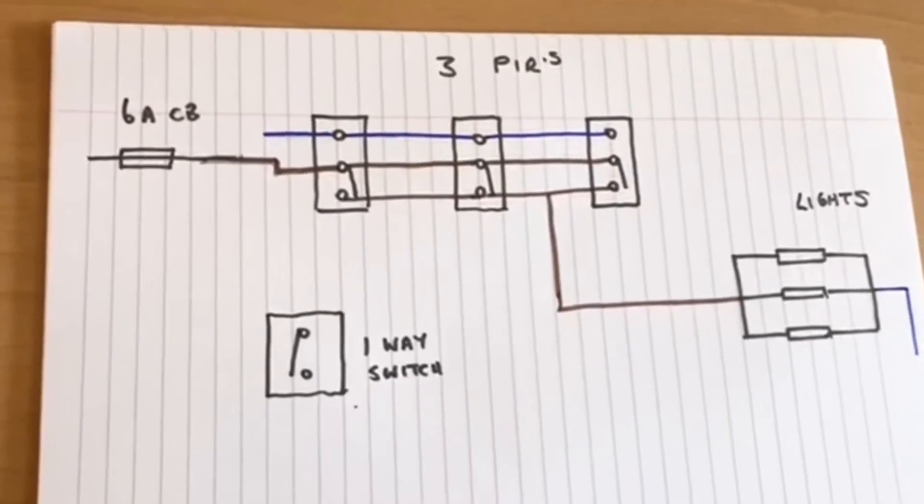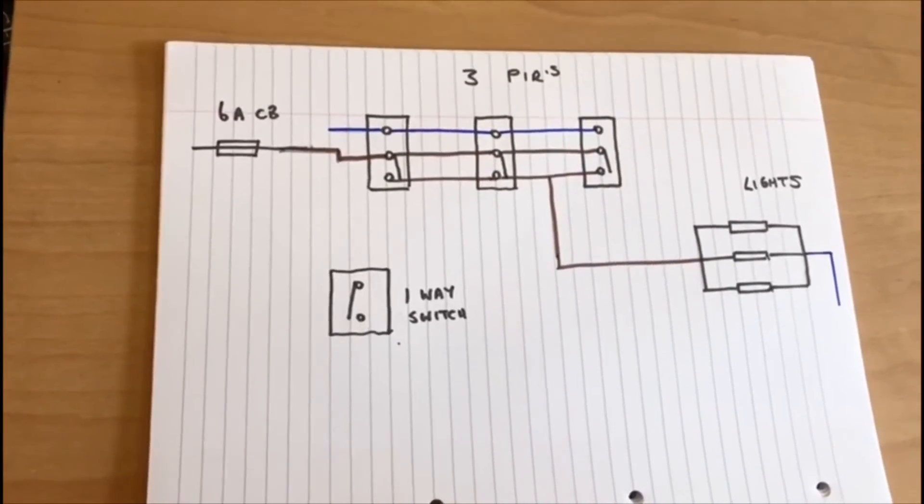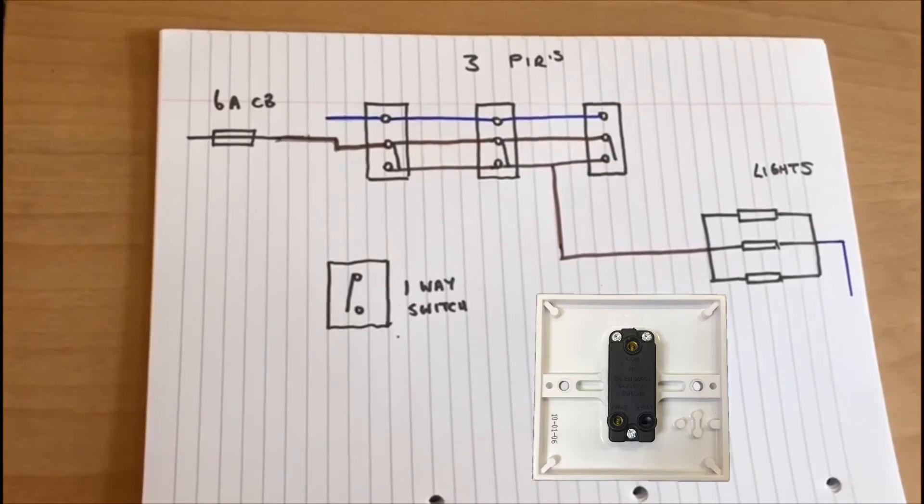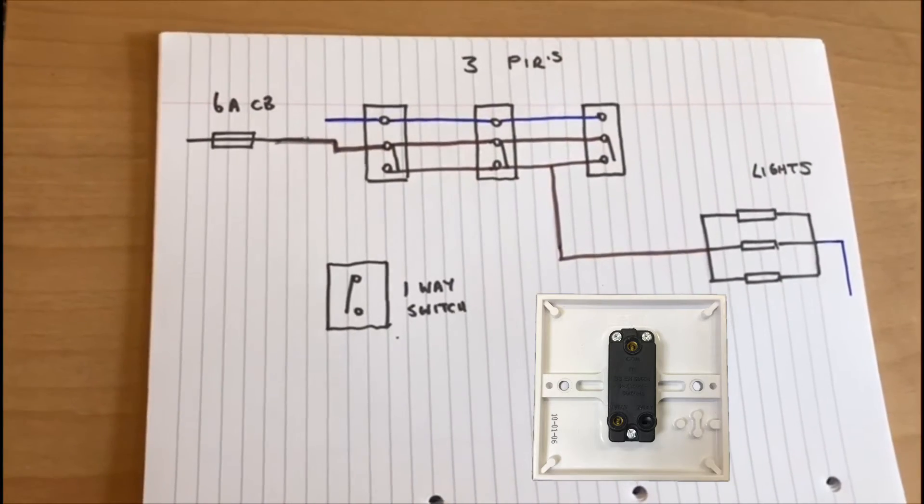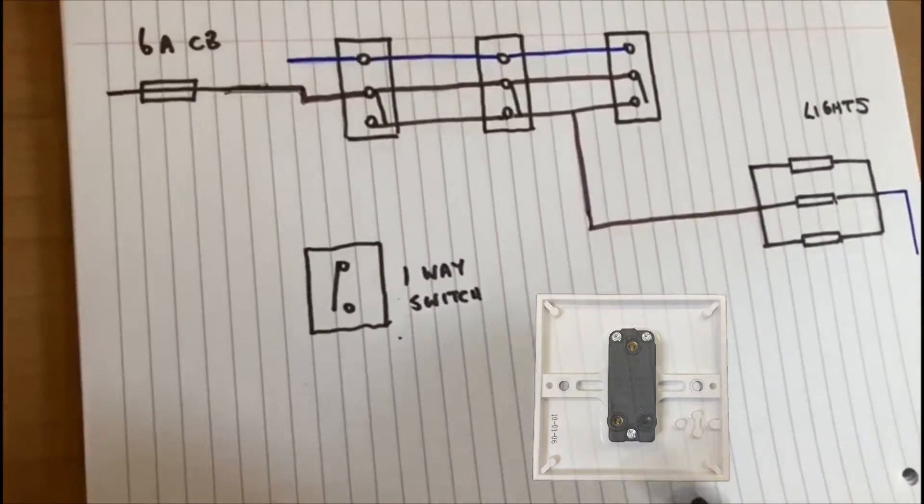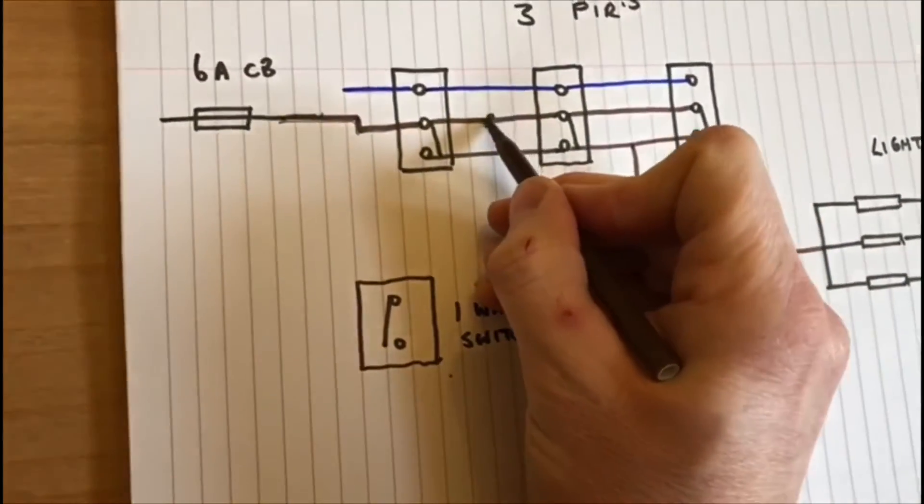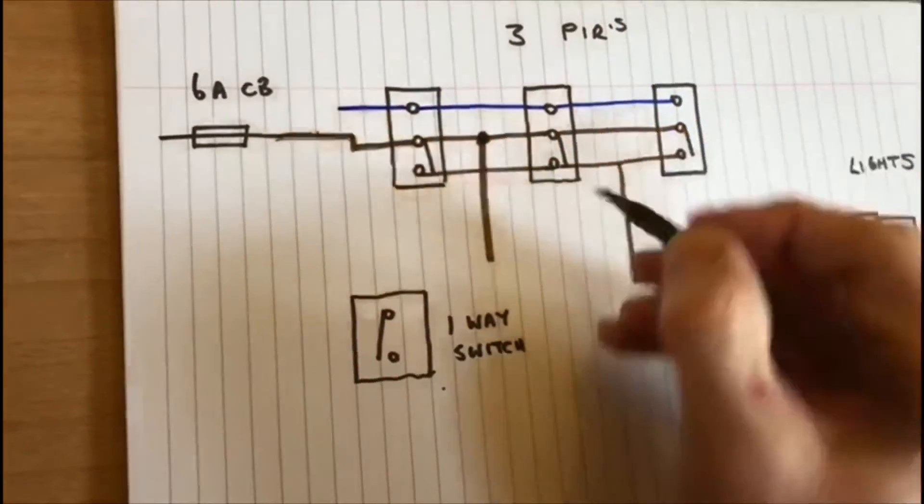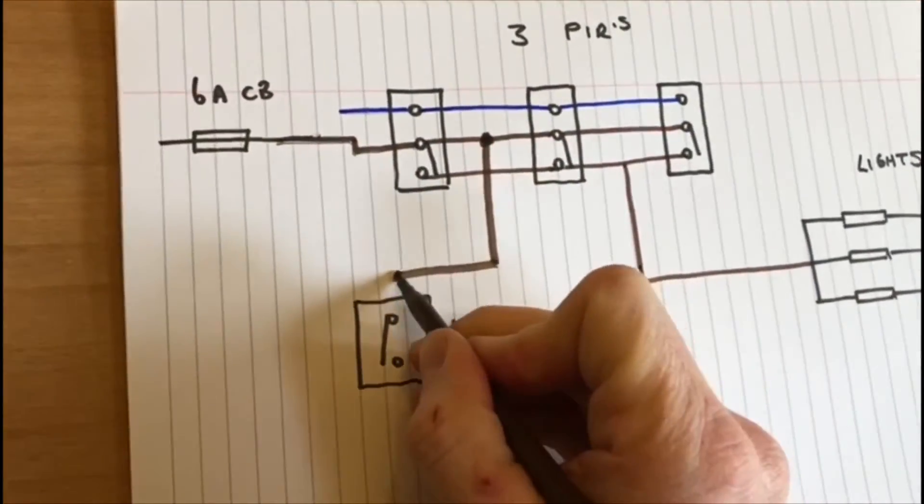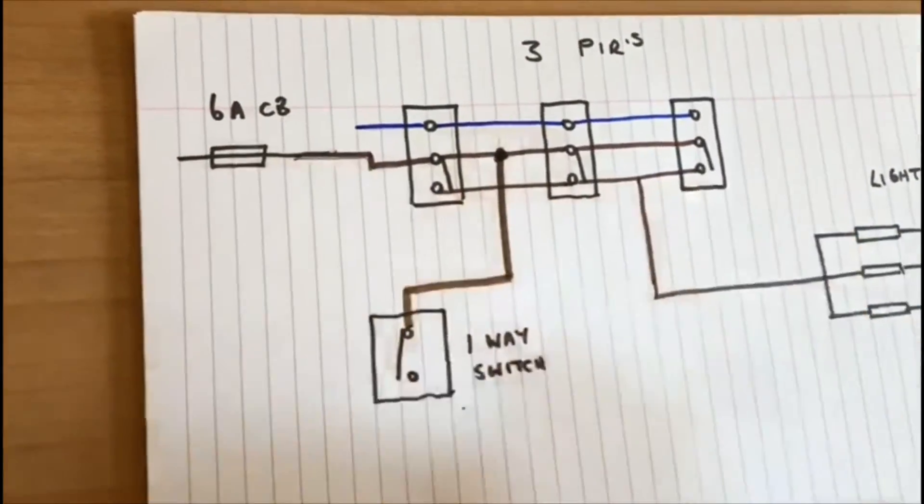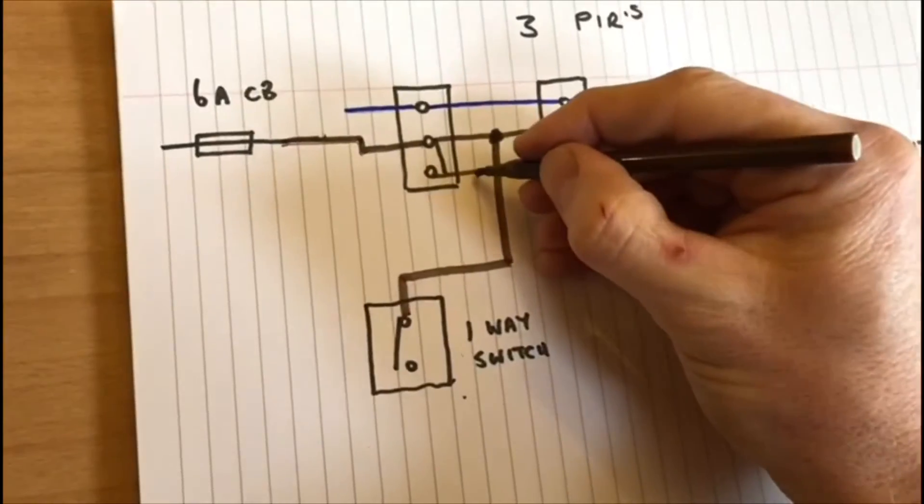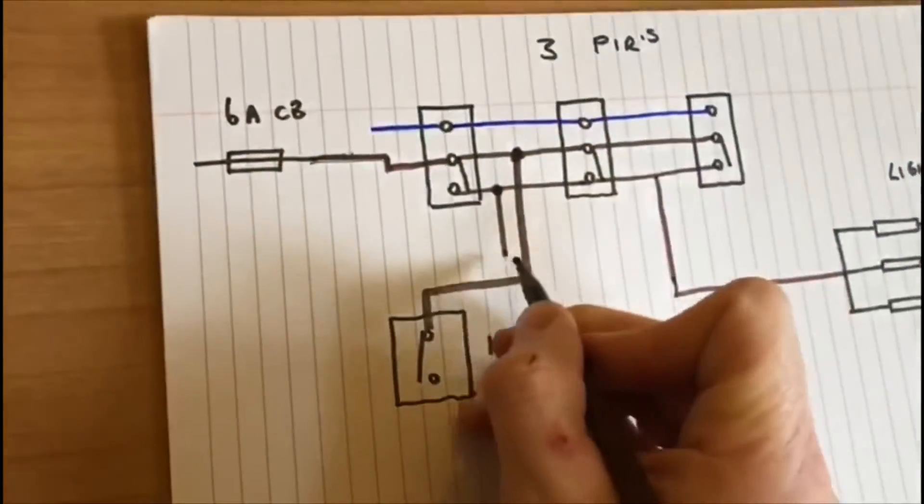Looking at the circuit, we're using three PIRs. This can also have a one-way switch to be used, and that will act as an override switch. I'm just going to take it from anywhere along the circuit. I'm going to take a connection from this one here and connect it across, and then from this one here I'm going to take a connection from there.